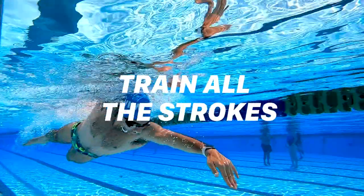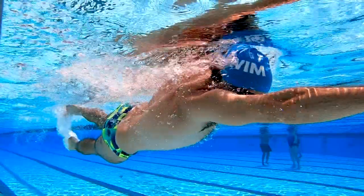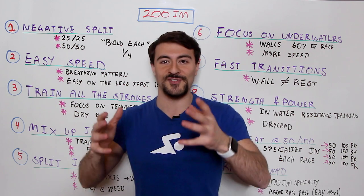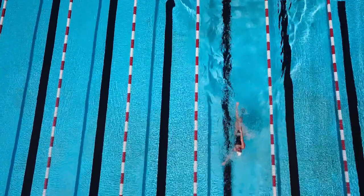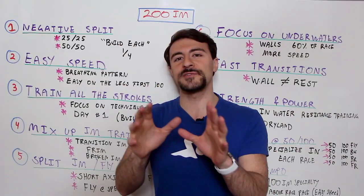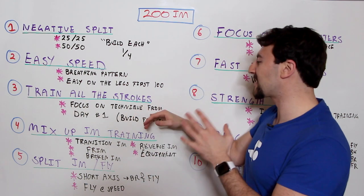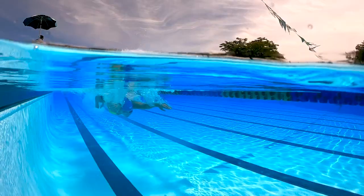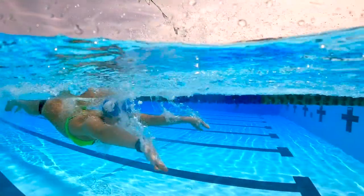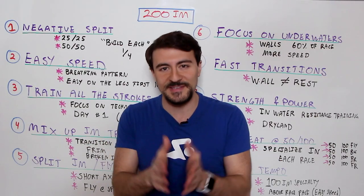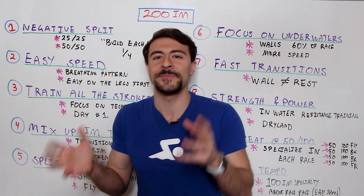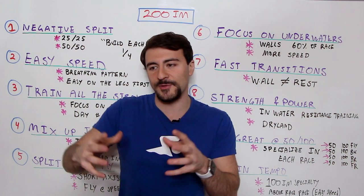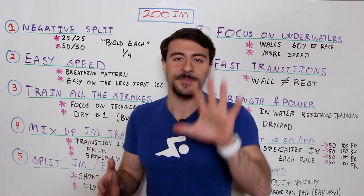Tip three: train all the strokes. It sounds obvious, but many swimmers aren't training much IM or strokes — they're just doing a lot of freestyle. Mix in a potentially uncomfortable amount of stroke work, but do it with super high technique. Build a foundation of stroke mechanics from day one. In the 200 IM you can't neglect any stroke; as distance increases you have to fall back on fundamentals.